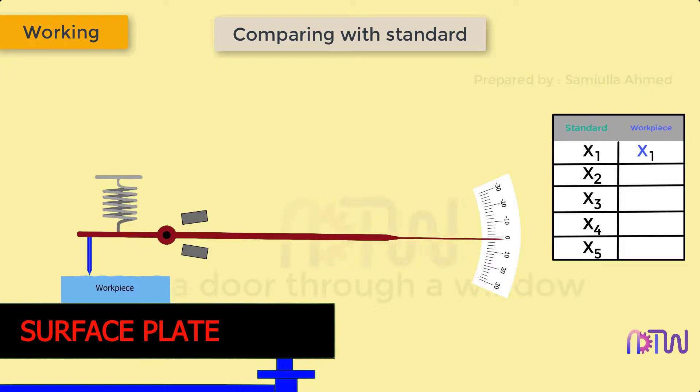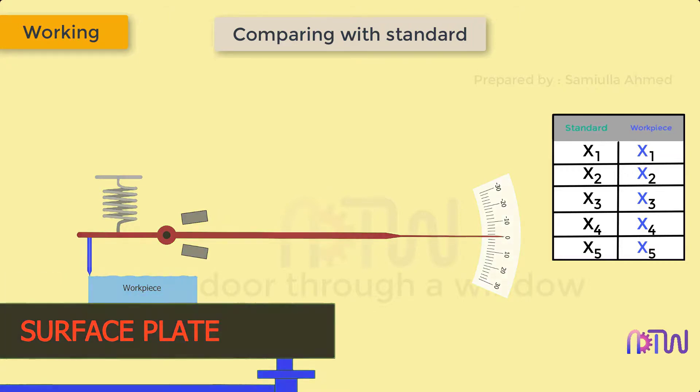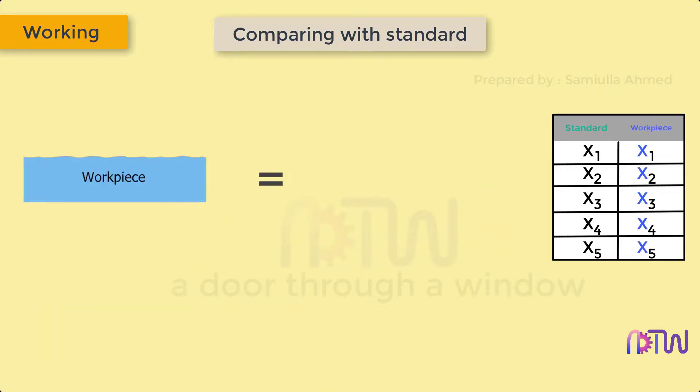The variations shown by the plunger are noted down. Once both variations are noted, the variations of the component are compared with the variations of the standard. If the component variations are lesser than that of the standard, the part is accepted, or else it will be rejected. This method is used during inspection processes.